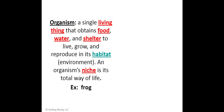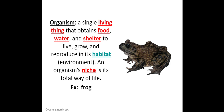An organism is a single living thing that obtains food, water, and shelter to live, grow, and reproduce in its habitat or environment. An organism's niche is its total way of life — what it eats, what it contributes to the environment, what it does. That's its role. A frog's niche might be that it eats a lot of bugs, keeping the habitat from being overrun. One frog is one single living thing — that's why we call it an organism.